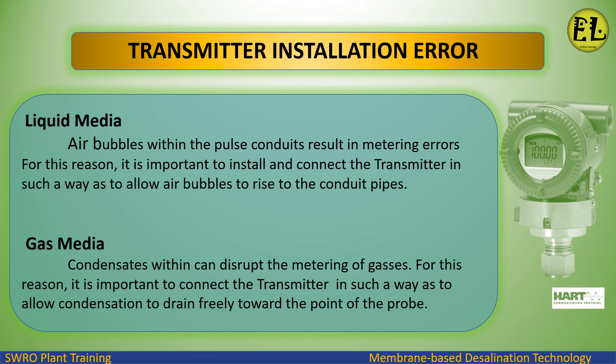Transmitter Installation Errors — Liquid Media: Air bubbles within the pulse conduits result in metering errors. For this reason, it is important to install and connect the transmitter in such a way as to allow air bubbles to rise to the conduit pipes. Gas Media: Condensates within can disrupt the metering of gases. For this reason, it is important to connect the transmitter in such a way as to allow condensation to drain freely toward the point of the probe.